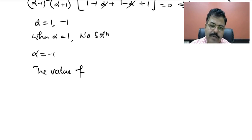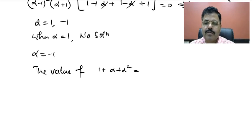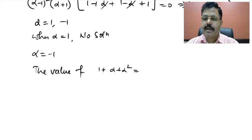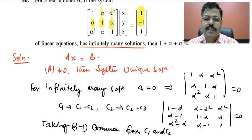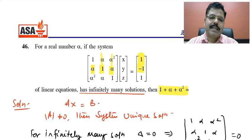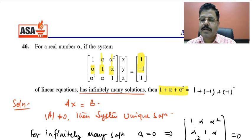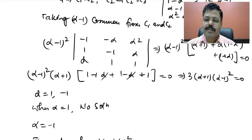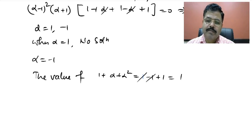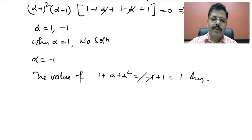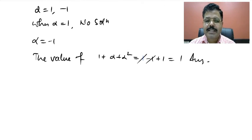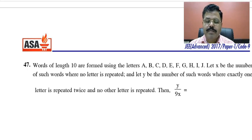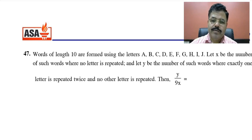The question asks for the value of 1 + α + α². With α = −1: 1 + (−1) + (−1)² = 1 − 1 + 1 = 1. So the answer to this question is 1.